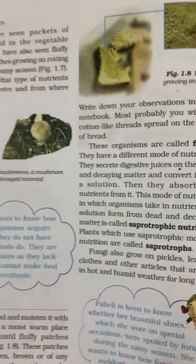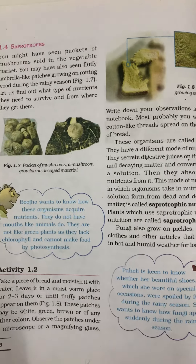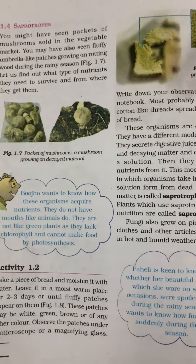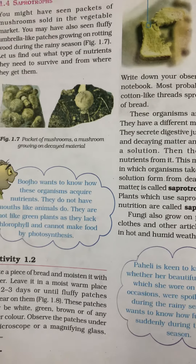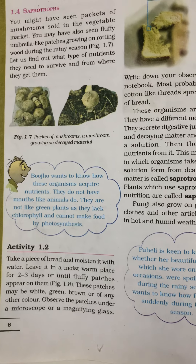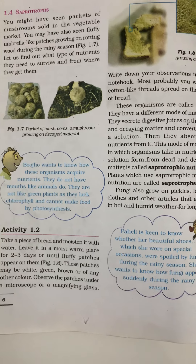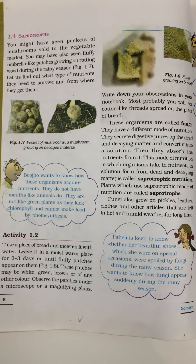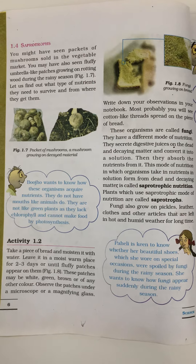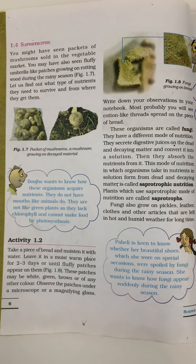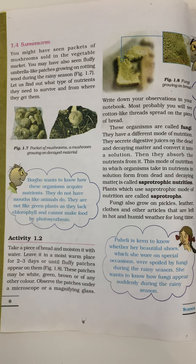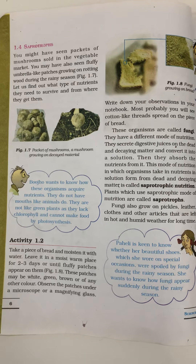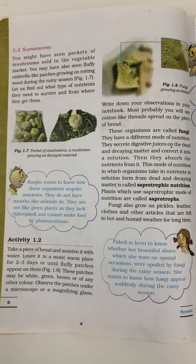The second form of nutrition is saprotrophic. In saprotrophic nutrition, they secrete digestive juices on dead or decaying matter, convert it into solution, and absorb it. Such plants or organisms are called saprotrophs. The best example is fungi.